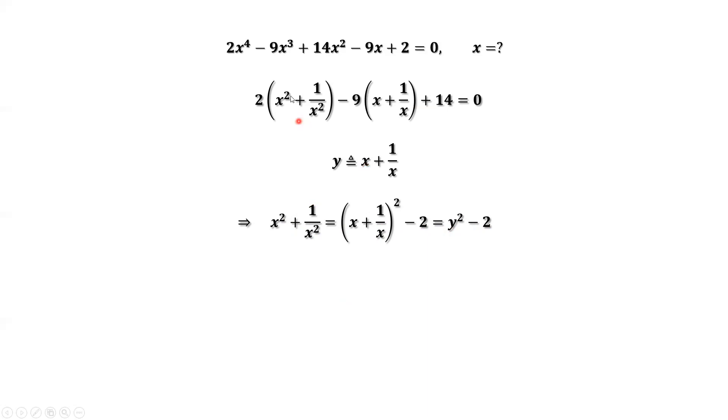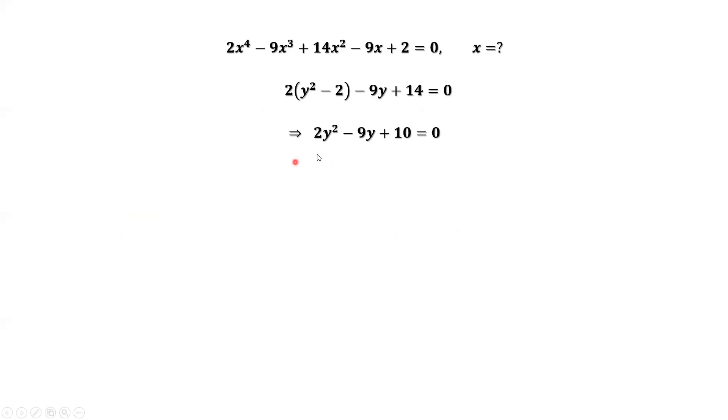We replace all x terms in terms of y. Then we have 2 times y squared minus 2, minus 9y plus 14 equals 0. Simplifying the left-hand side, we have a quadratic equation for y. We use the quadratic formula to solve this equation. Solving this equation, we have 2 answers for y: y equals 5 over 2 and y equals 2.